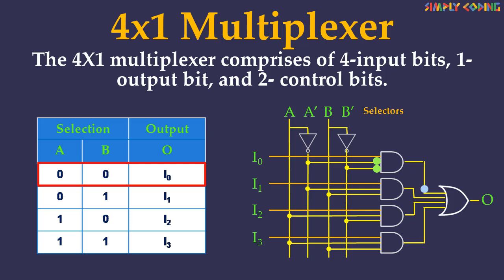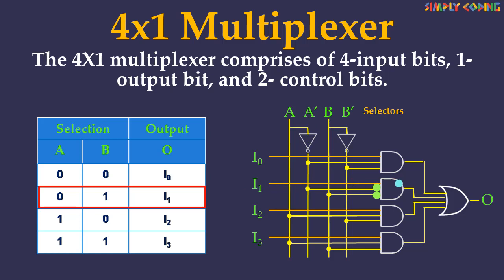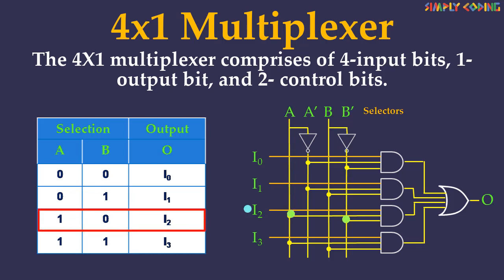Thus data input I0 is transmitted to the output O. If the control input is changed to 0, 1 then all gates are restricted except the second AND gate. In this case I1 is transmitted to the output and O is equal to I1. If the control input is changed to AB equal to 1, 0, all gates are disabled except the third AND gate. In this case I2 is transmitted to the output and O is equal to I2.